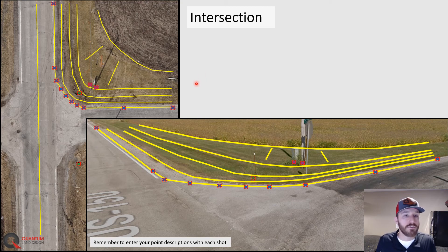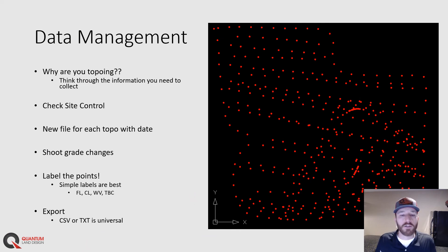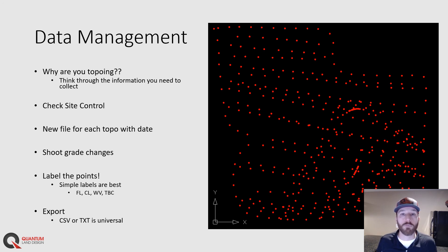That's all there is to the intersection — you'll basically rinse and repeat the same method on the other three corners, and then you'll have all the topo data for the intersection tied into your cross sections going up and down the road for the entire project site. Let's step back and take a look at data management one more time in review. Think about why you're topoing and what kind of information you need — measuring production, doing an as-built, or capturing the entire job site for volumes. Always check into site control and save those points. Set up a new topo file each day with the date appended to stay organized. Shoot grade changes at the important spots that will help represent that grade back in the office, and make sure you label those points so anyone can understand what you did that day.